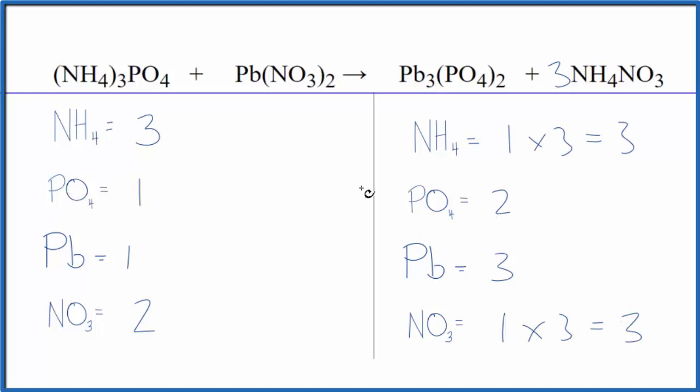Let's fix the phosphates. I could put a two in front of the ammonium phosphate, so now I'd have three times two, that would equal six. But I'd have one times two, that would equal two, so I balanced the phosphates.